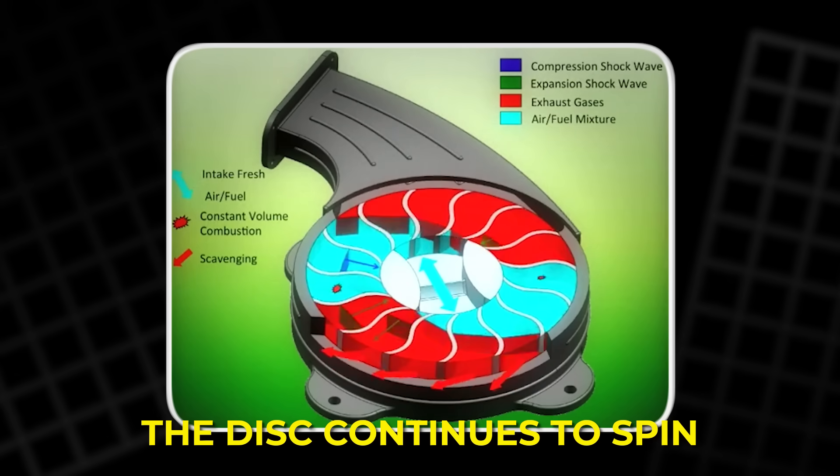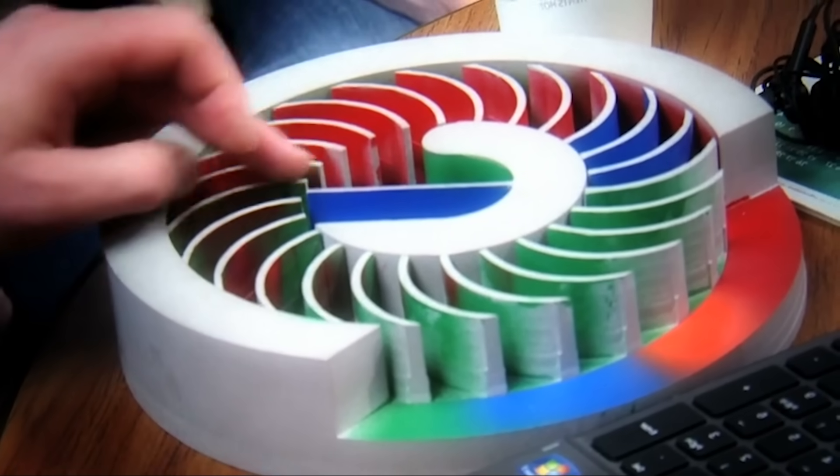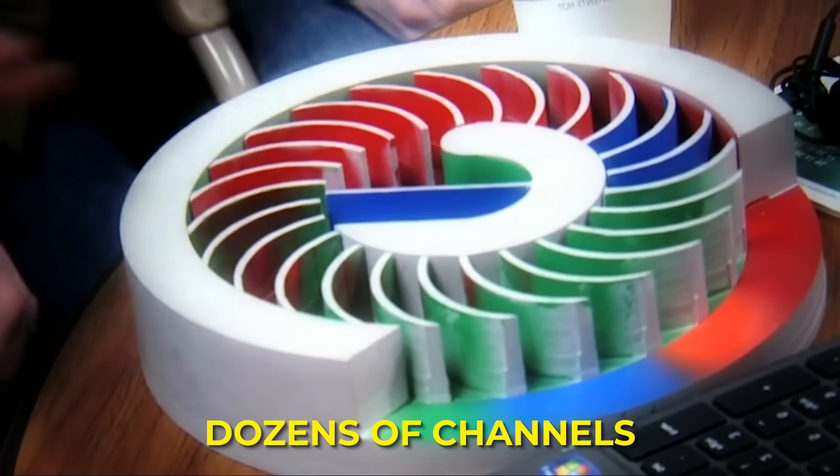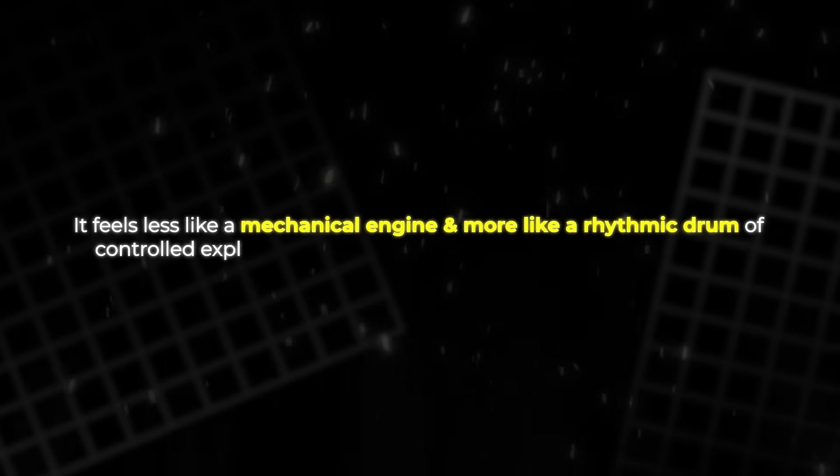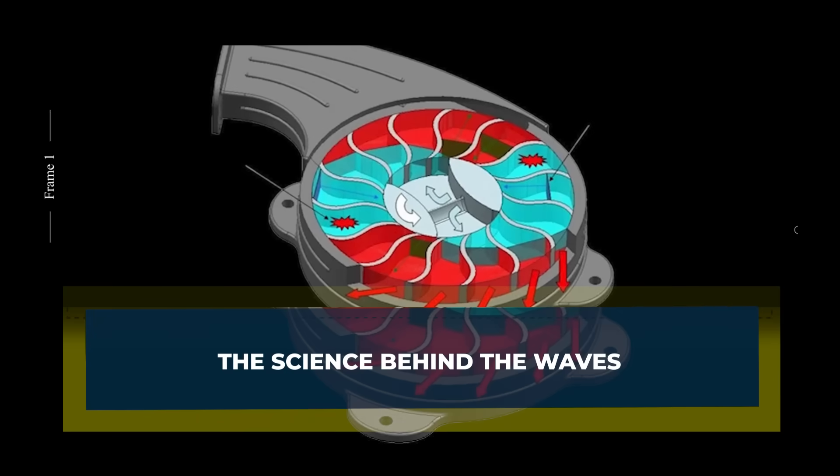Engineers realized that pressure waves can do the job of compression far faster than moving parts can. That idea became the foundation of the wave disc engine. Fuel is injected into this rapidly compressed air, combustion begins almost immediately, and the burned gas shoots out through an exhaust port that appears as the disc continues to spin.